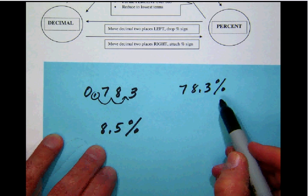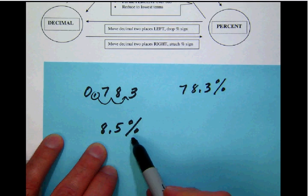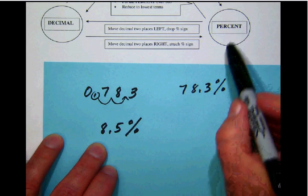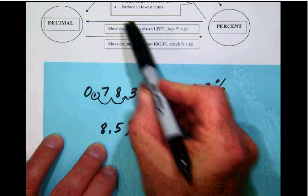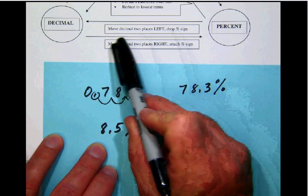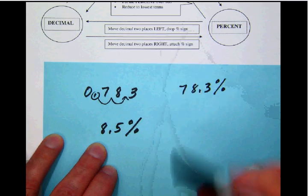While we're at it, let's do the other one. Notice that we have 8.5 percent, but we want to express that as a decimal. To go from a percent to a decimal, follow this arrow, as well as this set of instructions, which says move the decimal two places to the left and drop the percent sign.